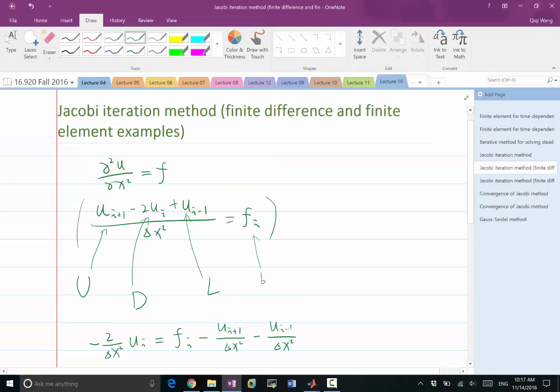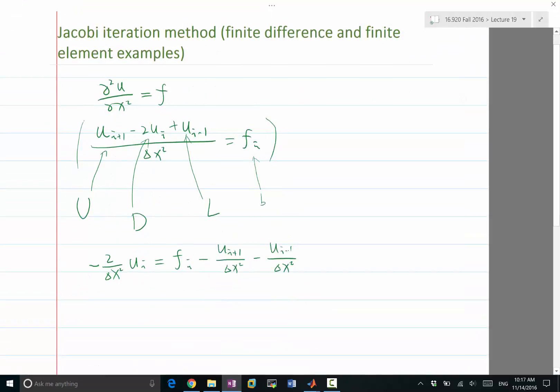Okay, for Jacobi iteration method, what we do is we keep the diagonal part to be an unknown and the lower and upper diagonal part to be known. So these are index k and u_i, the diagonal part is index k plus 1. So this is going to be our iteration, right?